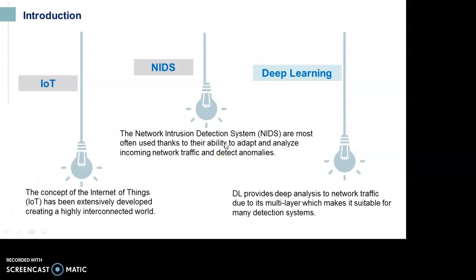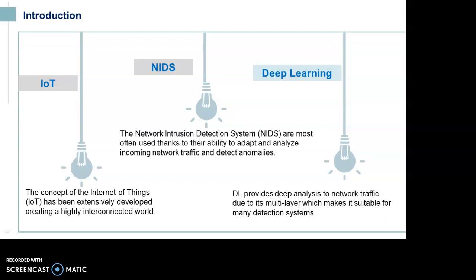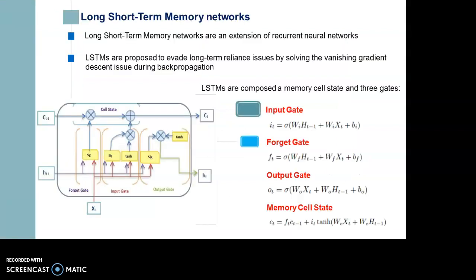In our work, two anomaly detection mechanisms based on deep learning are adopted to detect abnormal network traffic. The first model adopted is Long Short-Term Memory networks. LSTM networks are an extension of recurrent neural networks with gate units. LSTM has a shared structure of repeating modules, different from standard RNNs. LSTM is composed of wire cells and memory cell states. The structure of an LSTM cell is defined by three gates: input gates, forget gates, and output gates. These gates are used to monitor the flow of information through cell states and are similar in function to neural network nodes.